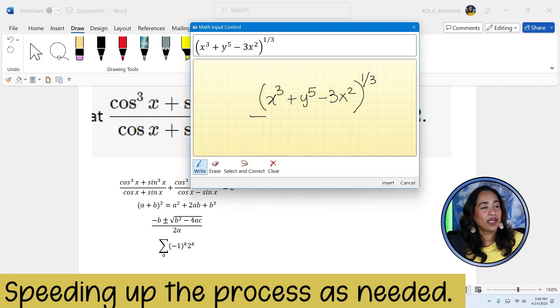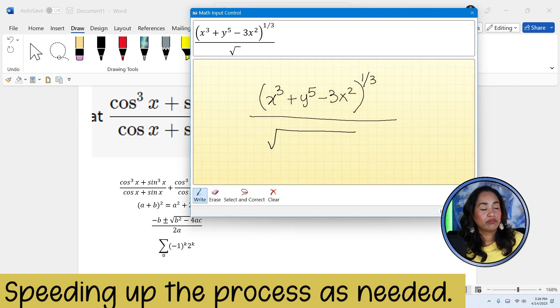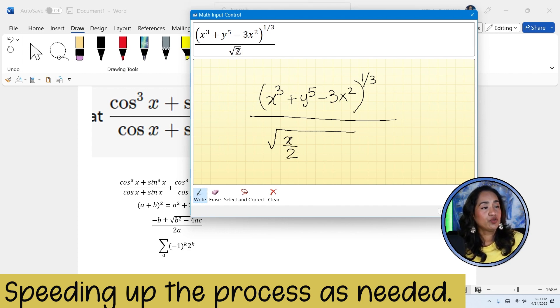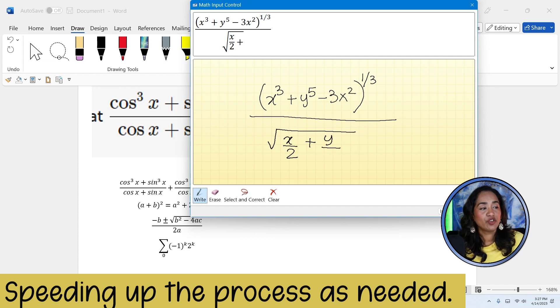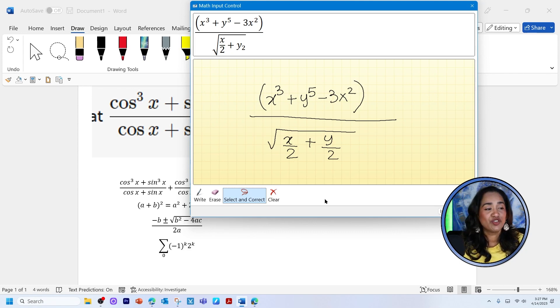And then I can always go ahead, add a fraction to this one divided by square root. And let's just say the square root is a fraction again. So I can put x over two plus y. I'm just randomly throwing in variables to show you how easy it is to go ahead and write your equation. And if you made a mistake, all you have to do is take your eraser and erase it. Or if you want to correct it, take the select and correct tab, highlight what you want to, and then it's going to change to whatever you want that to be changed into.